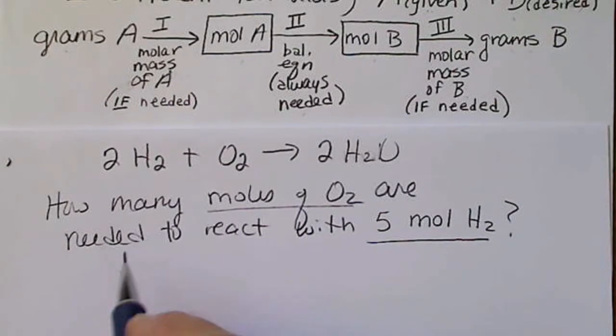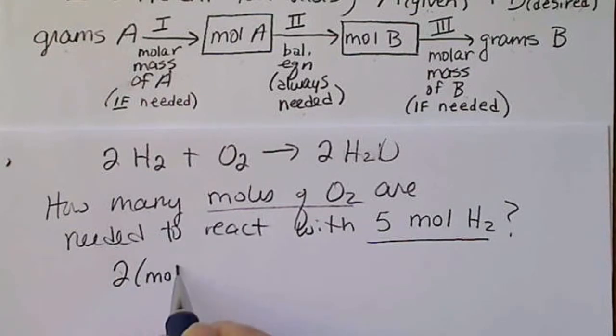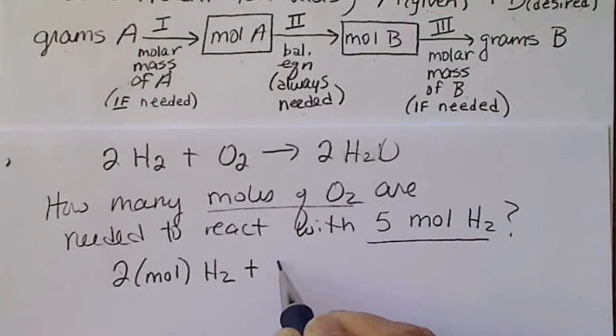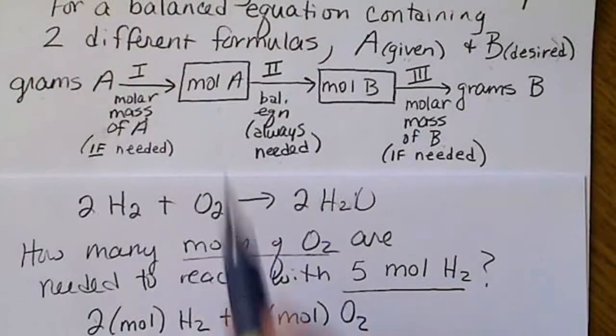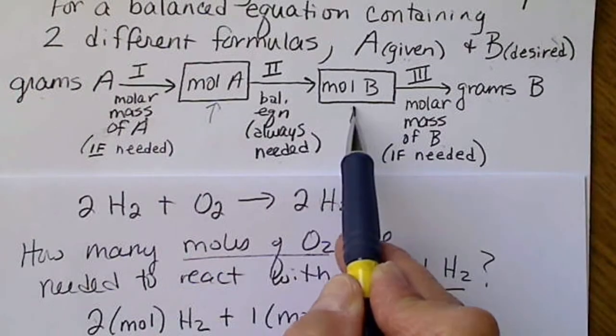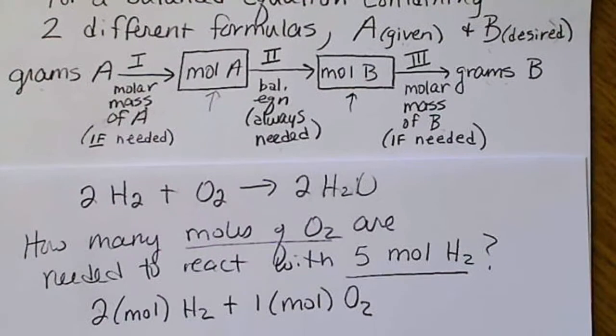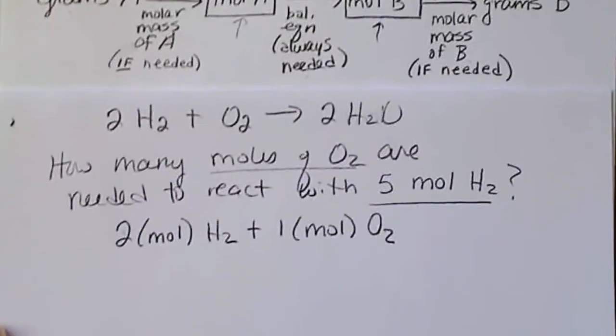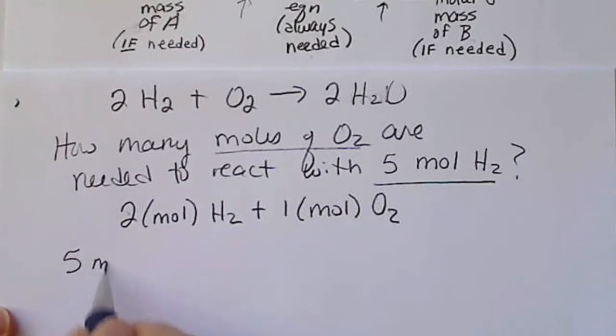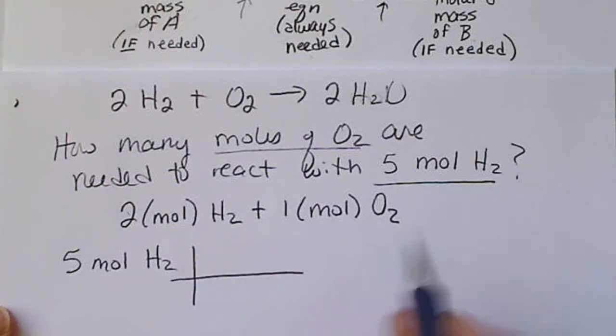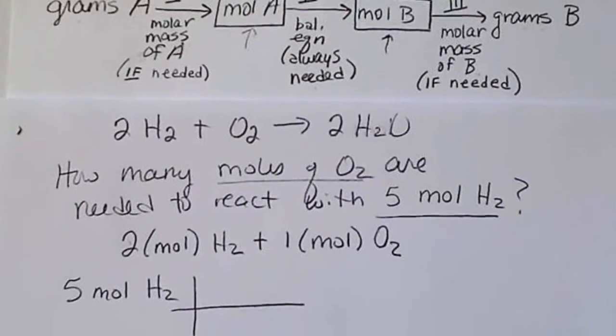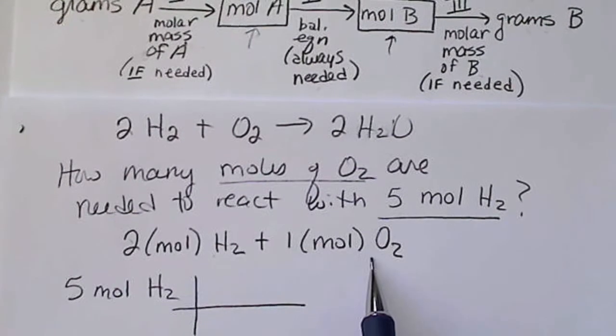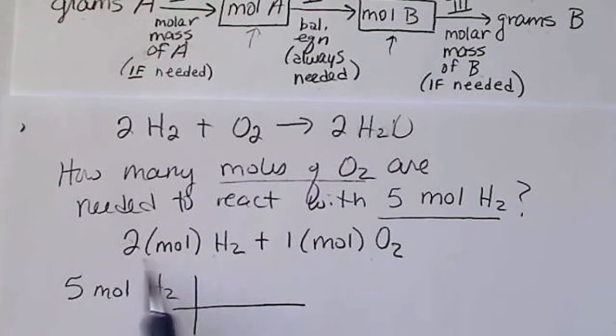Here we're given moles and we're asked for moles of oxygen. So the only part of the balanced equation we're going to need is the two moles of hydrogen is going to react with one mole of oxygen. On this map, we're given moles and we're asked for moles. So this is going to be a one-step calculation. I'm going to write down what's given, five moles of hydrogen, and we're going to go directly to step two. So step two is using the balanced equation. So I generally circle these numbers, we're going to see where these numbers come from.